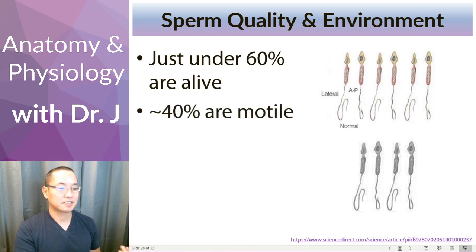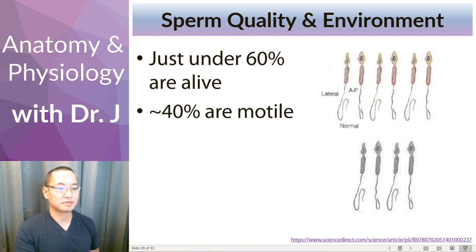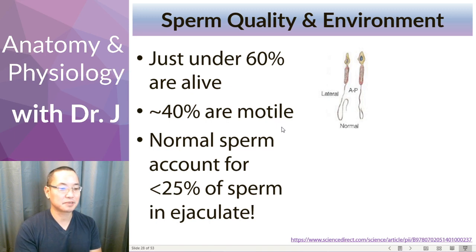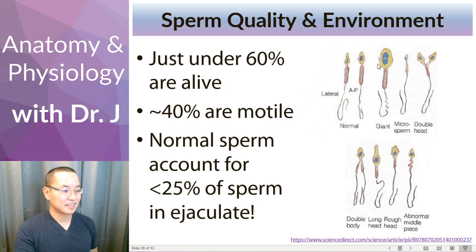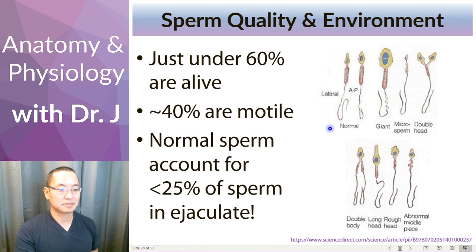Only about 40% are motile. So many can't actually swim, and if they're not swimming, they'll have a hard time reaching the fallopian tubes to fertilize an egg. And then there's normal morphology — this is what a normal sperm looks like from the side and from the anterior or posterior. But in a typical semen sample, you might find giant sperm, sperm with two heads, sperm with two tails, or other deformed shapes. Normal sperm make up only about 4 to 25% — the WHO guidelines suggest that range is considered normal.